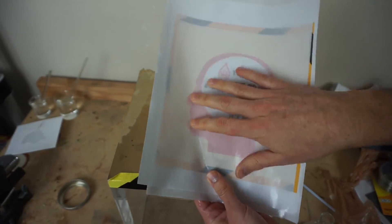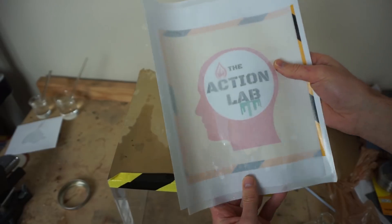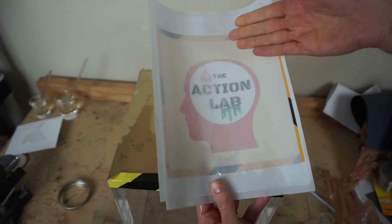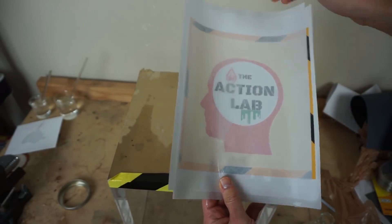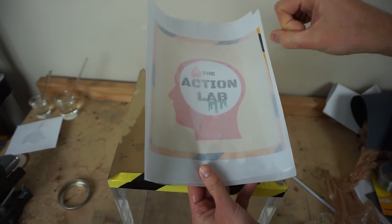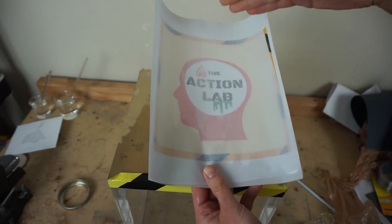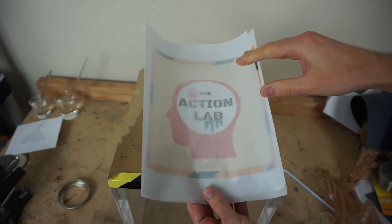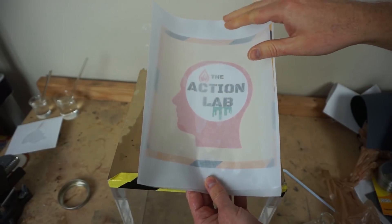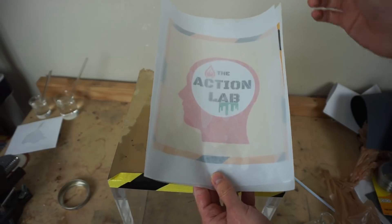So what's happening here is also the reason why when you eat greasy food on a paper plate, you can see through the paper plate. Because the grease's refractive index is closer to that of the cellulose than air. A different way of saying that is grease bends light about the same as cellulose does.